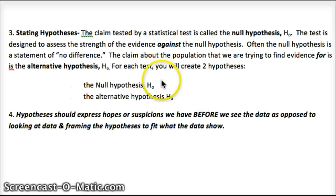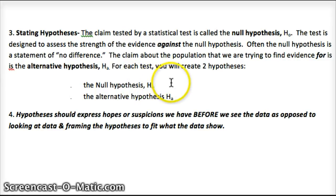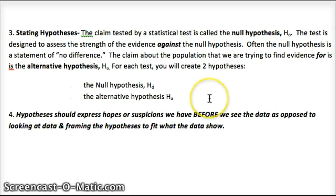You're going to always state the null hypothesis, which generally uses an equal sign. In the last problem, the null hypothesis would be that the parameter is 0.5. Then there's an alternative hypothesis — she thought she had more than 50% of the vote, so it would be greater than 0.5. These should express hopes or suspicions we have before we see the data, not fit the hypothesis to the data. So these should be established before you go through the test and look at the data.